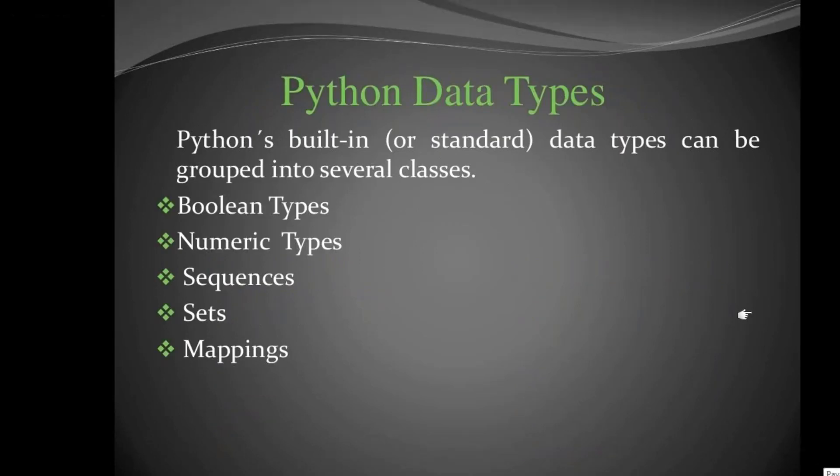Python has basic built-in data types called standard data types: Boolean type, numeric type, sequence type (list and tuple), sets — frozen set and normal set — and mapping. A set works like in mathematics where X ranges over values 1, 2, 3 up to 10. The same way, here we can store a set into a variable.